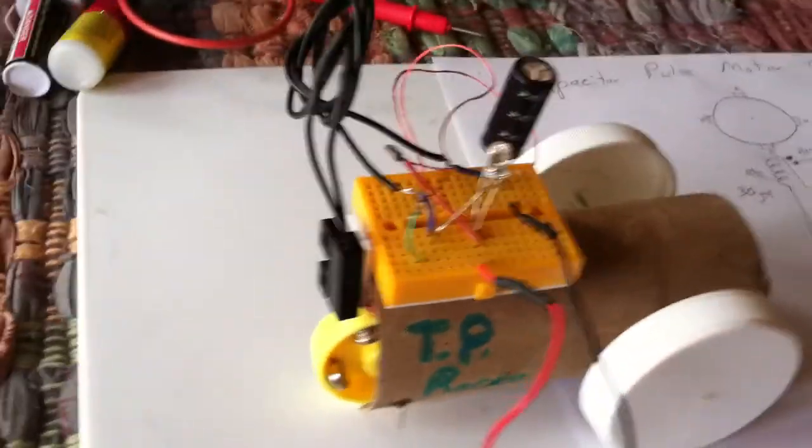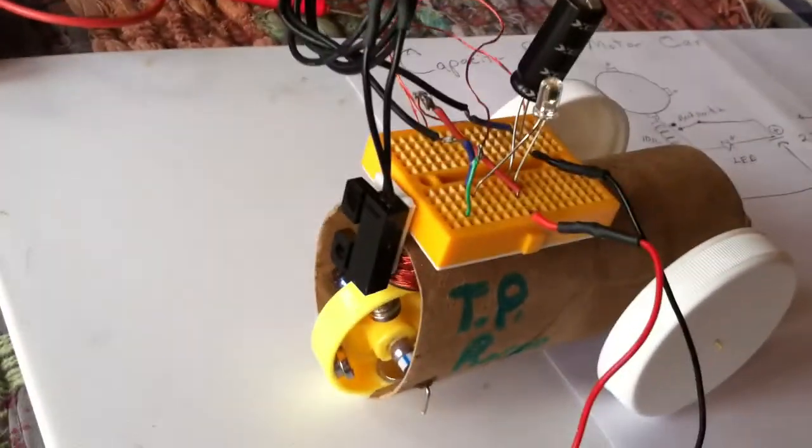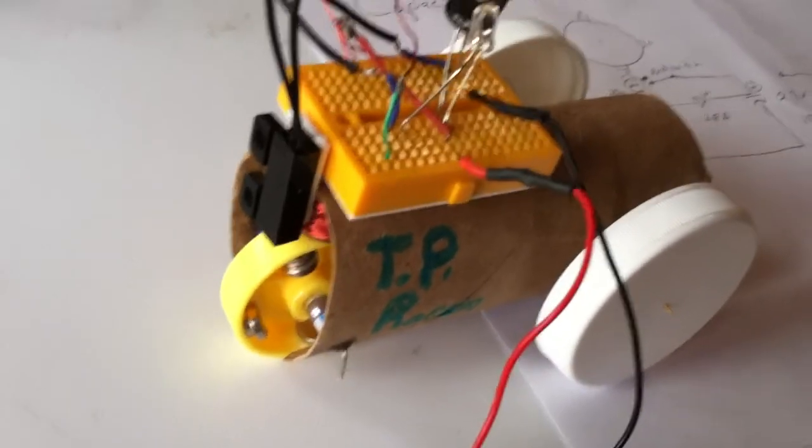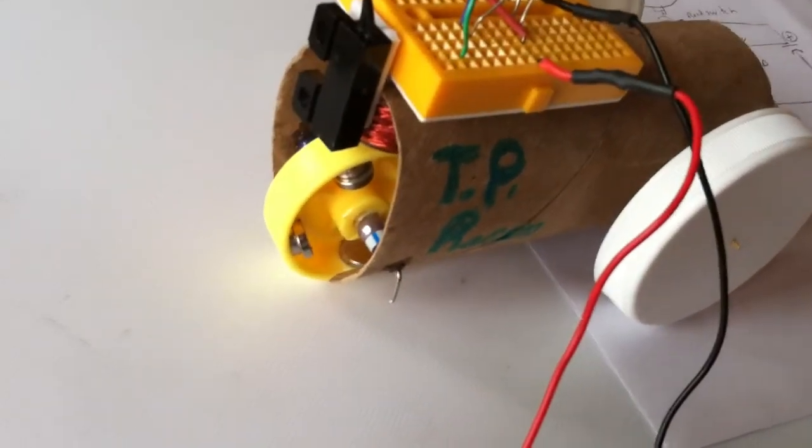This is a little capacitor pulse motor car that I threw together here using a toilet paper roll for the chassis and the front wheel has magnets on it.